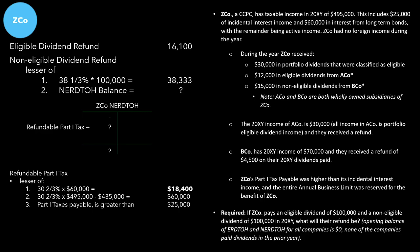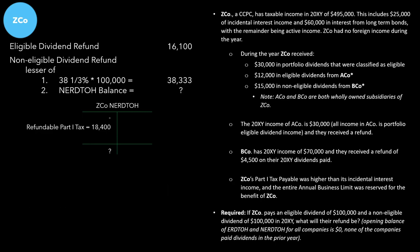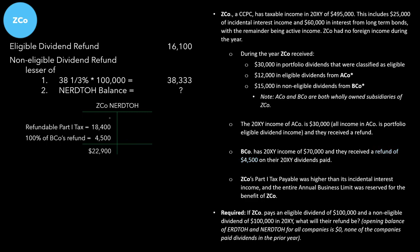We take $18,400 and plug it into our non-eligible RDTOH account. BCO receives a refund, and unlike ACO, the narrative tells us the refund was $4,500 — we can just plug that straight in. Because ZEDCO wholly owns BCO, we take 100% of BCO's refund: 100% × $4,500 = $4,500. We now have an ending balance for the non-eligible RDTOH of $22,900.